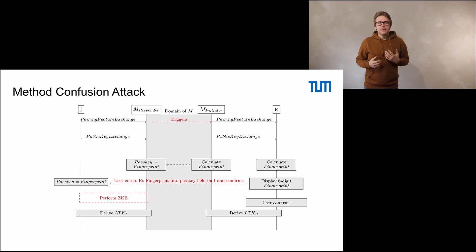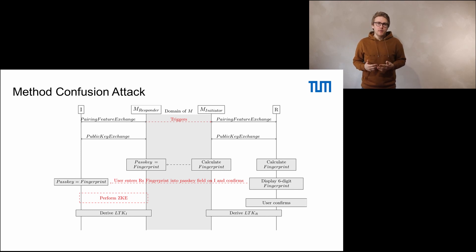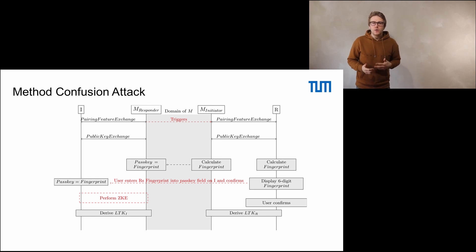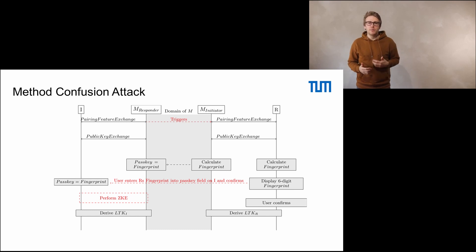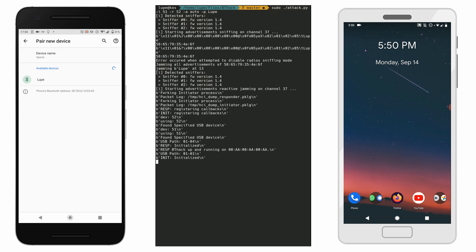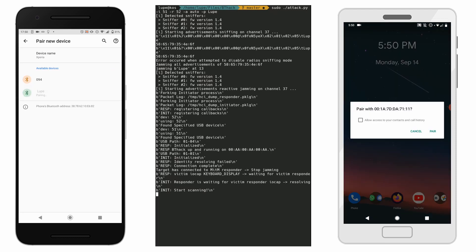The attacker, however, has gained knowledge of this value through the pairing via numeric comparison with device B. He is now able to perform the zero-knowledge key exchange with device A and conclude a fully active man-in-the-middle position, where he has exchanged a communication key with A and B separately. So let us view the previous video again, but now with a third view — the attacker view executing the method confusion attack.